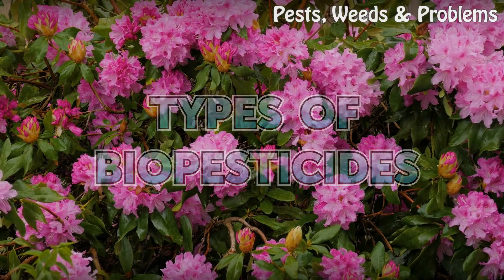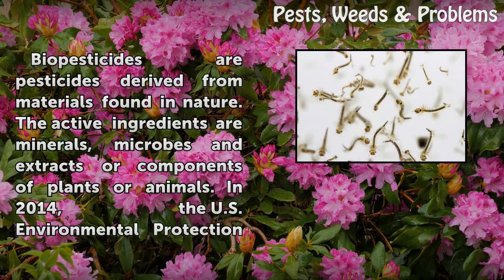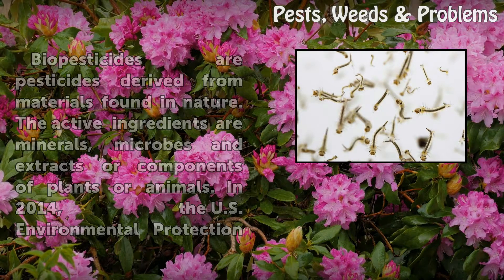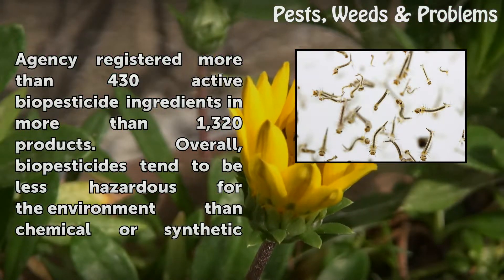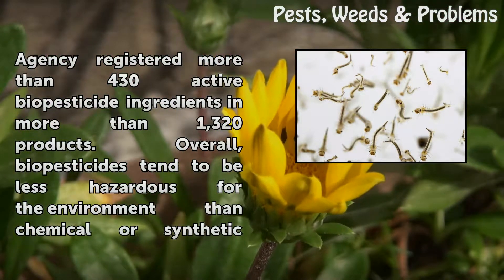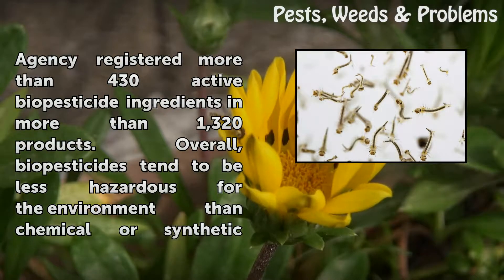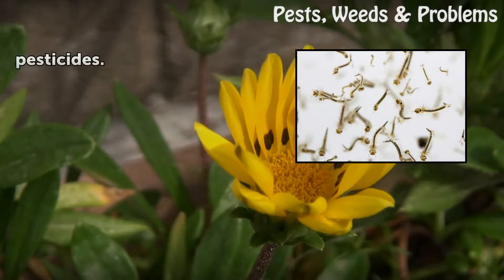Types of Biopesticides. Biopesticides are pesticides derived from materials found in nature. The active ingredients are minerals, microbes, and extracts or components of plants or animals. In 2014, the U.S. Environmental Protection Agency registered more than 430 active biopesticide ingredients in more than 1,320 products. Overall, biopesticides tend to be less hazardous for the environment than chemical or synthetic pesticides.